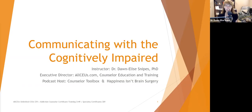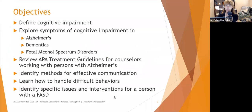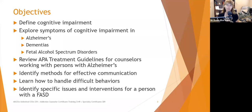Welcome to today's presentation on communicating with the cognitively impaired. I am Dr. Donnelly Snipes. Today we're going to define cognitive impairment and explore symptoms in Alzheimer's and other dementias, as well as fetal alcohol spectrum disorders. We'll review APA treatment guidelines for counselors working with persons with Alzheimer's, identify methods for effective communication and handling difficult behaviors, and identify specific issues and interventions for a person with a fetal alcohol spectrum disorder.